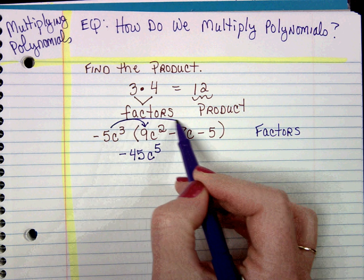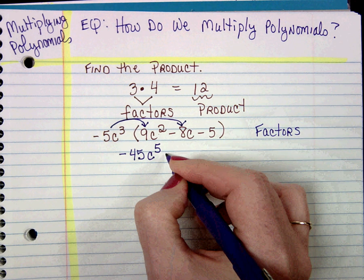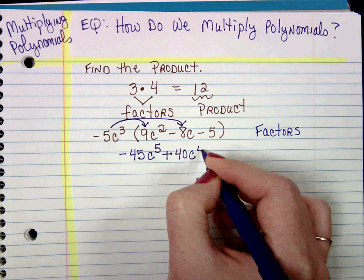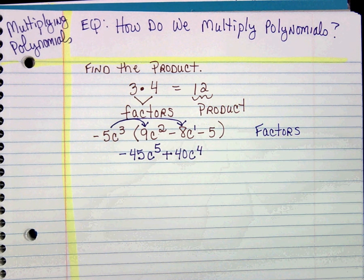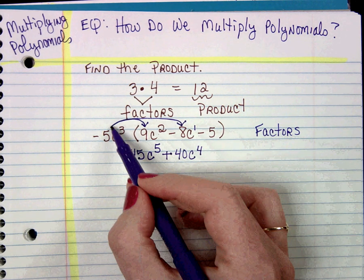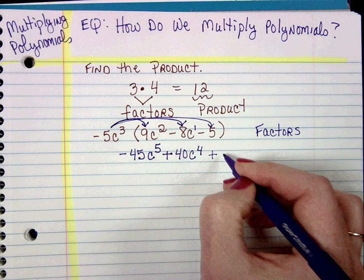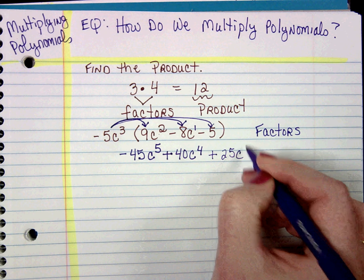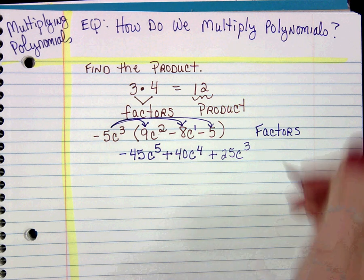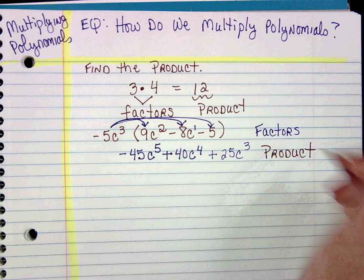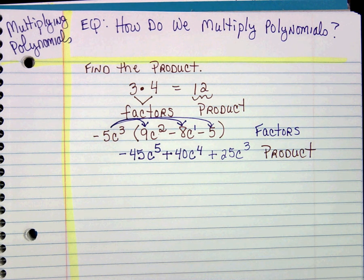Then we're going to distribute here. So this would be positive 40c to the fourth. Remember, it's understood that there's a 1 right there. I'm going to distribute it to the negative 5, so that would be positive 25c to the third. What we've done is we've created or found our product. Our product is this trinomial or polynomial.